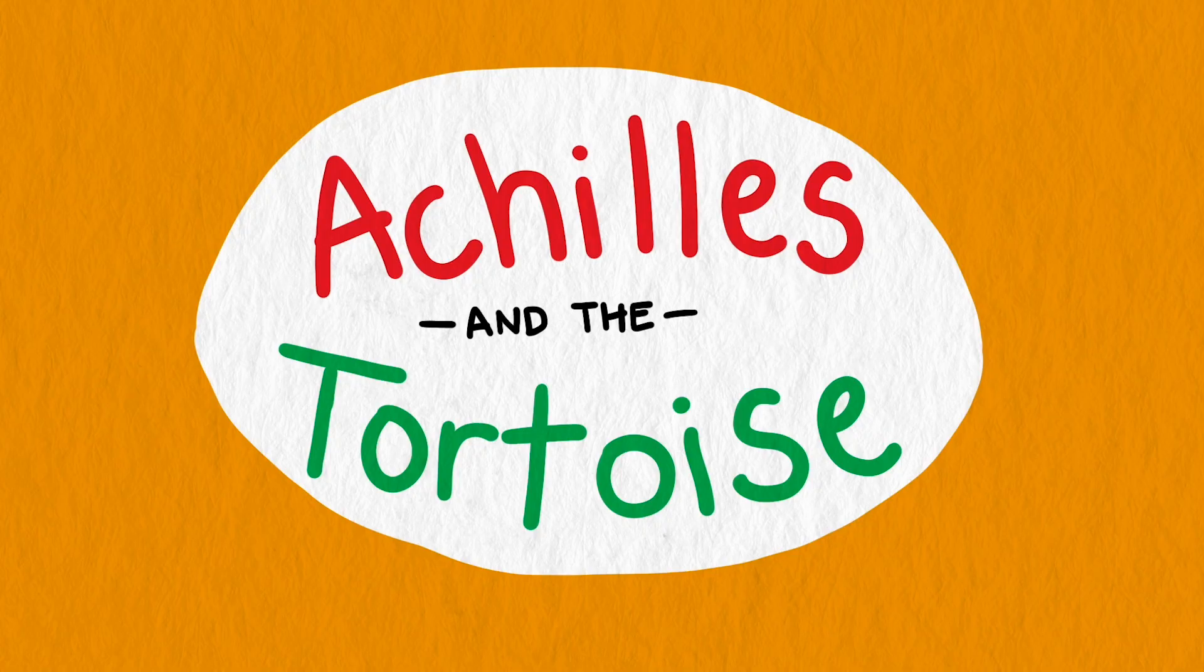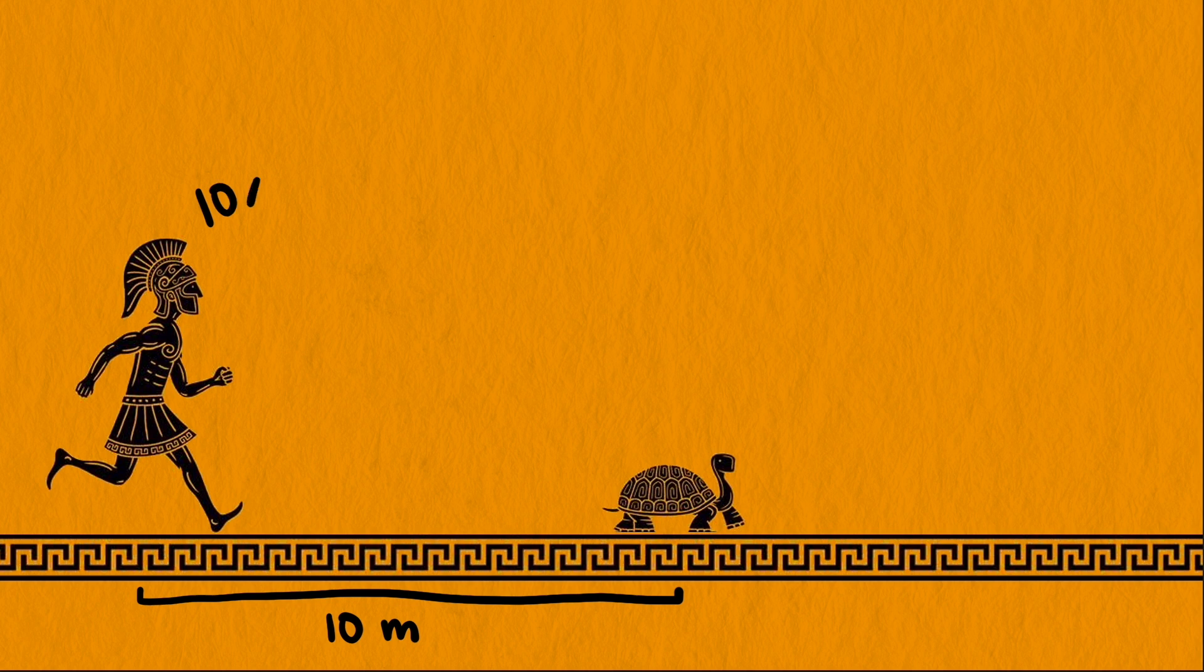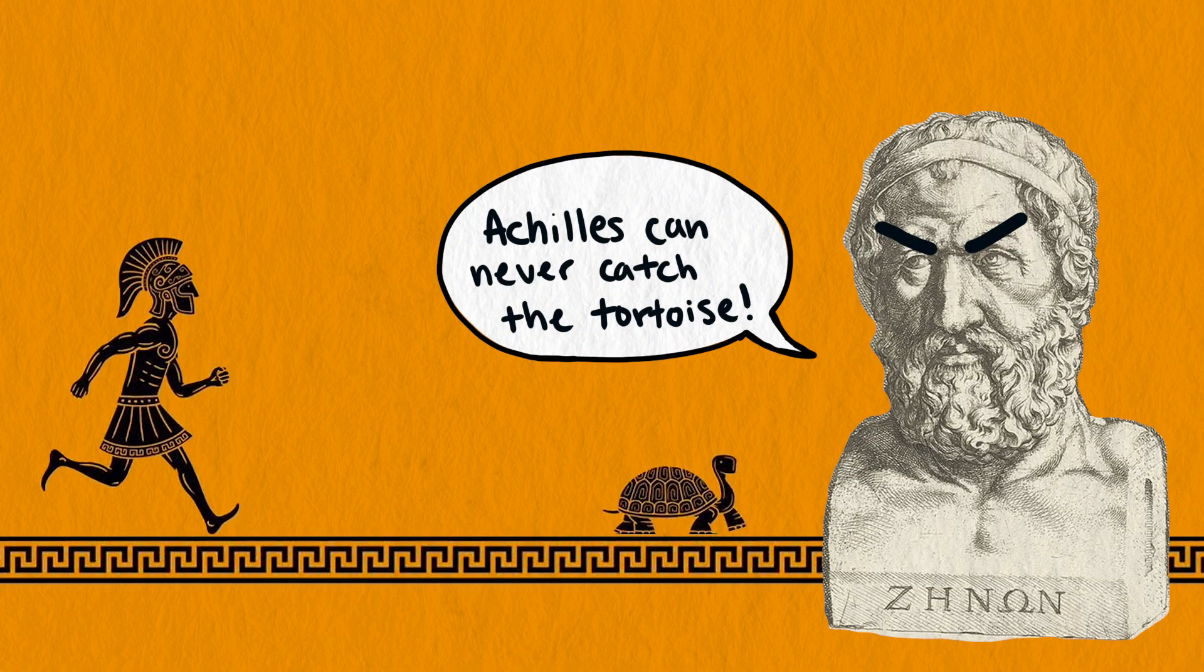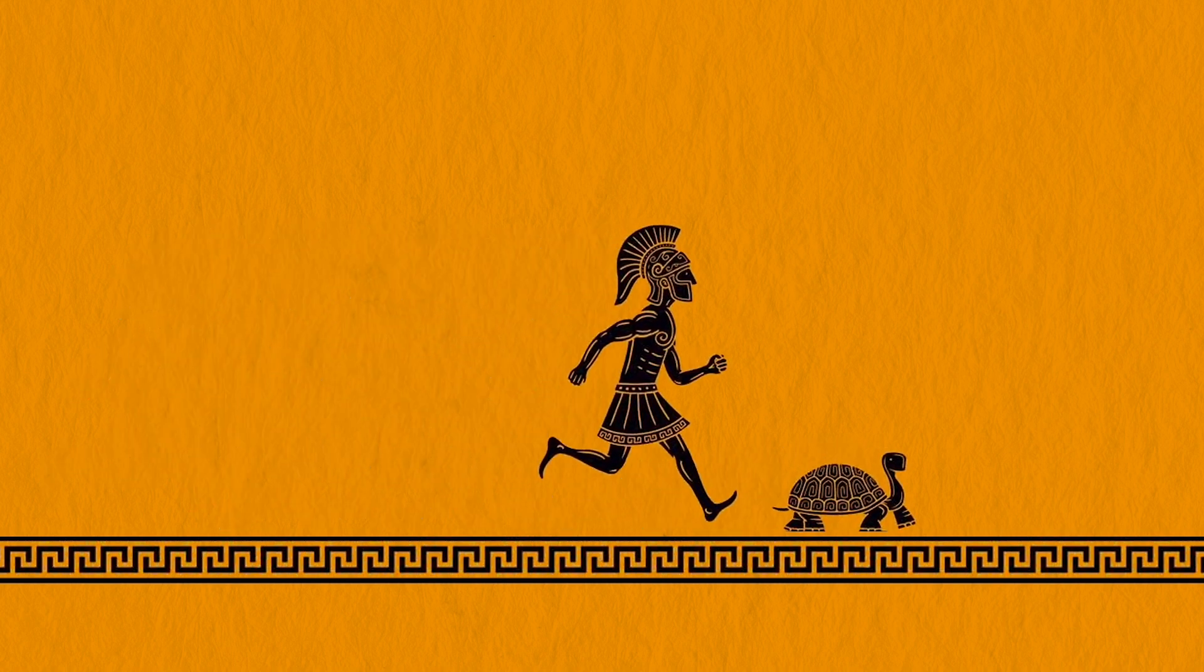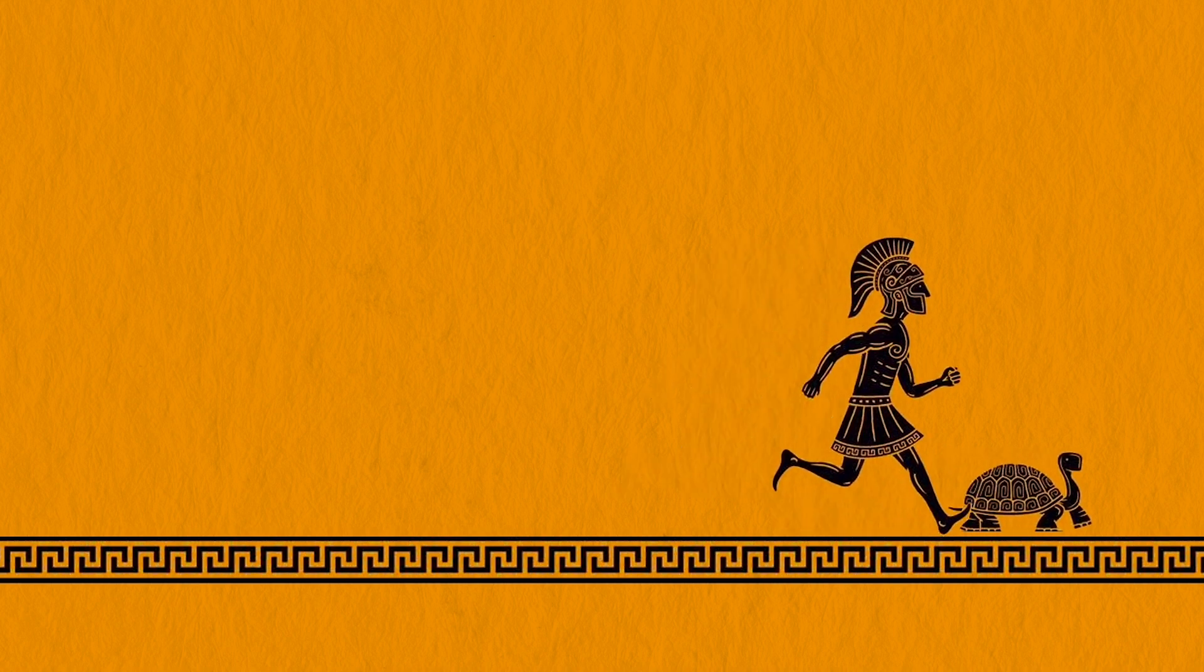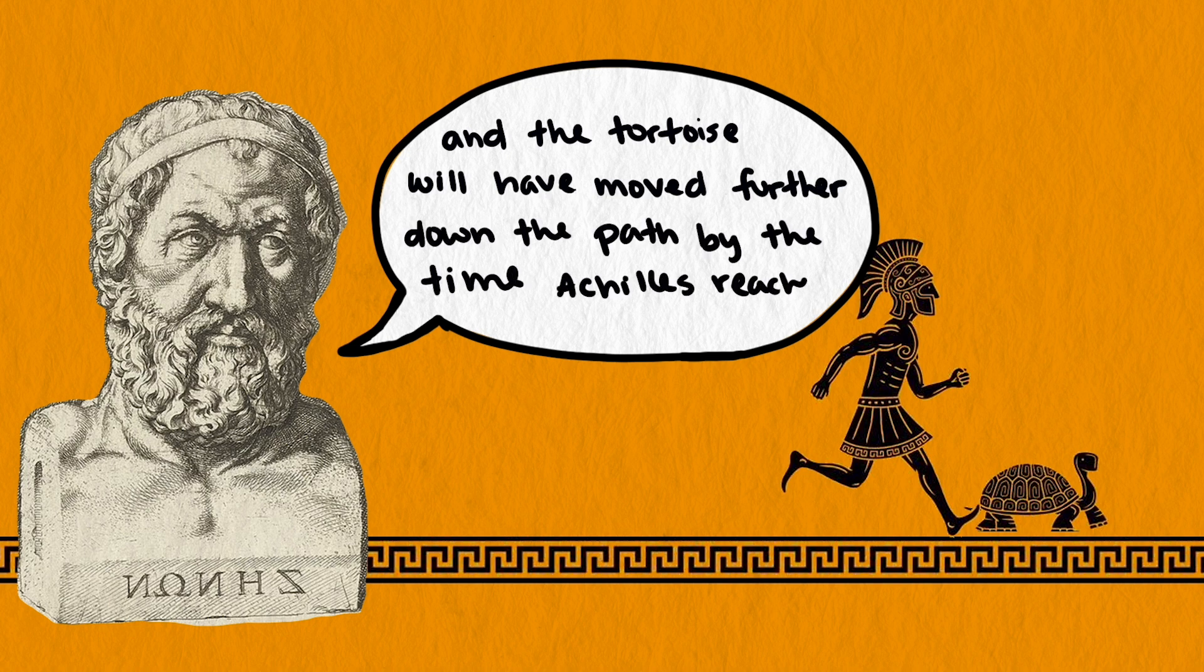Suppose Achilles starts 10 meters behind a tortoise, but runs 10 times as fast. Zeno argued that Achilles could never catch the tortoise because after Achilles runs 10 meters, the tortoise moves another meter. And after Achilles runs that meter, the tortoise moves another tenth of a meter. And so it would keep going on and on. There's always another point that Achilles would need to reach before catching the tortoise, and the tortoise will move further down the path by the time Achilles reaches that point.